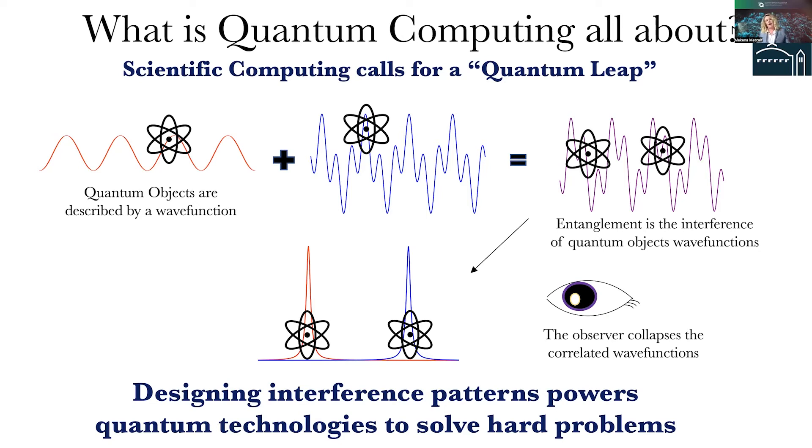So what is quantum computing all about? Yes, we're trying to use the properties of atoms like these wave functions to be able to solve really hard problems that I spoke about before. For instance, that traveling salesman problem is a very classic problem that we want to be able to use quantum computers to solve. And so a quantum algorithm designer like myself essentially is trying to find interference patterns that power quantum technologies to solve these hard problems.